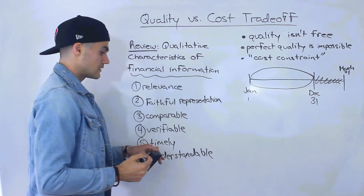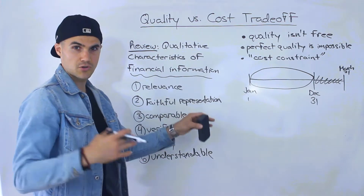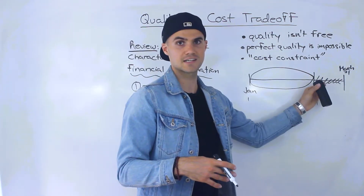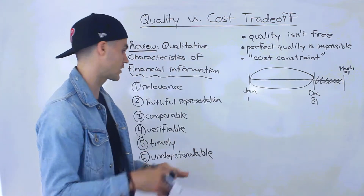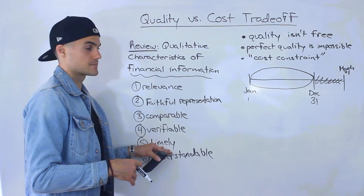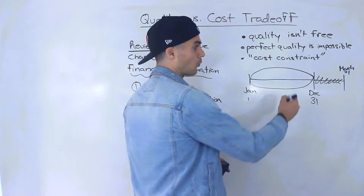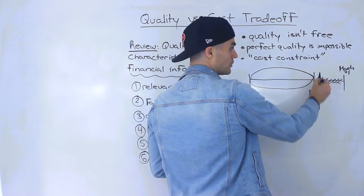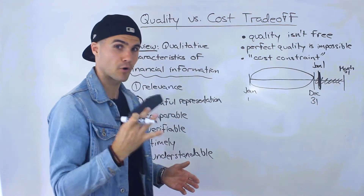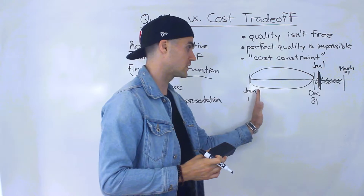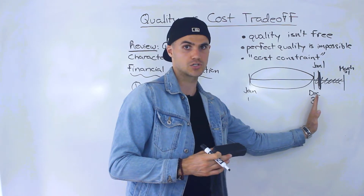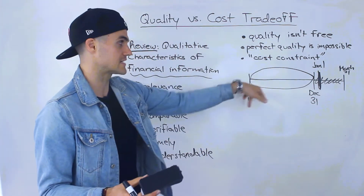Now, if the company — and let's assume this is a large company with a lot of financial data, a lot of stuff to organize, hence why that three-month period exists — let's say they wanted perfect timeliness. If they wanted perfect timeliness, the financial statements would probably be issued right on January 1st. If it were truly perfect, the financial statements would be created in real time as time went on, so right when December 31st finished, the financial statements would be ready for that entire year.